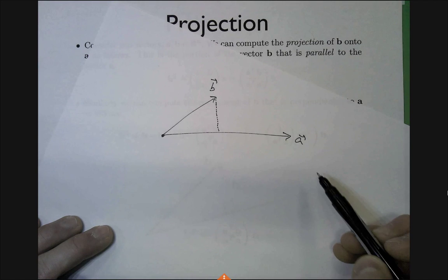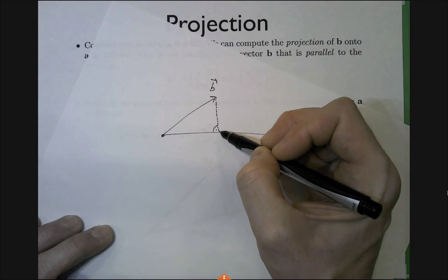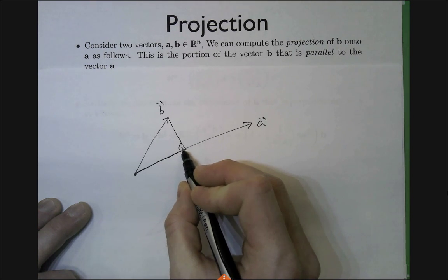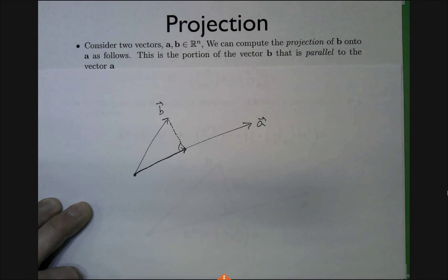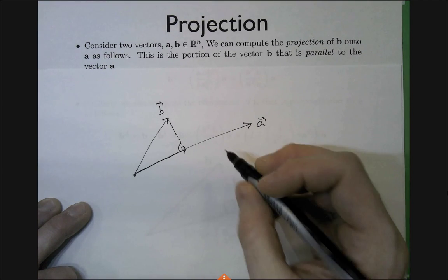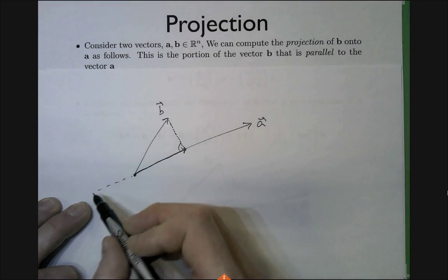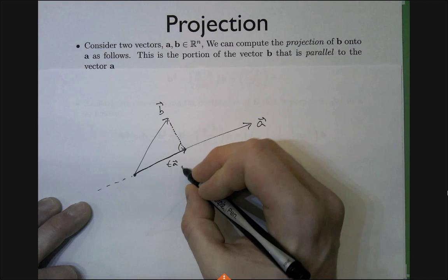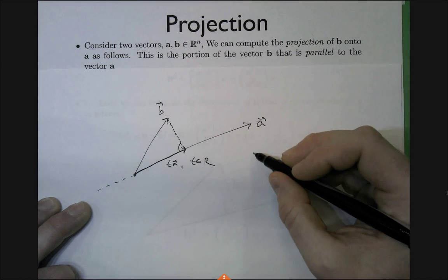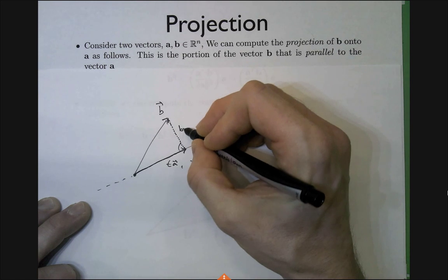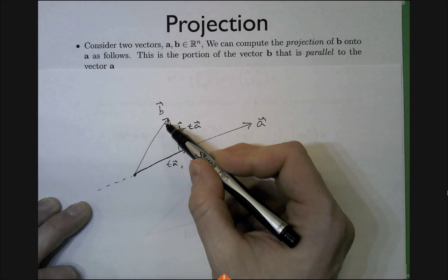By projection I mean orthogonal projection: if a is my ground, I drop vector b perpendicular to the ground and find where it lands. I want to find this projected vector. The vector a spans a one-dimensional linear subspace; all vectors in the subspace can be written as ta for some scalar t. So I'm looking for the specific scalar t — if the projection is ta, then the error vector b minus ta must be perpendicular to a.